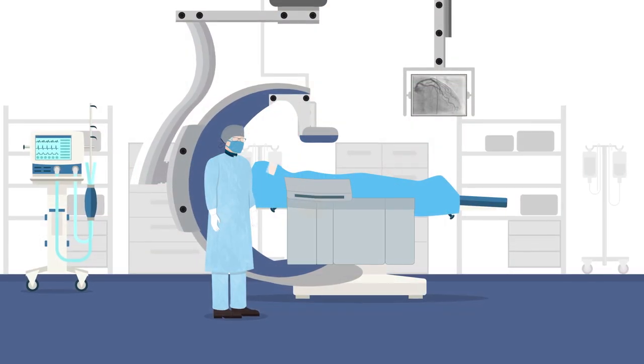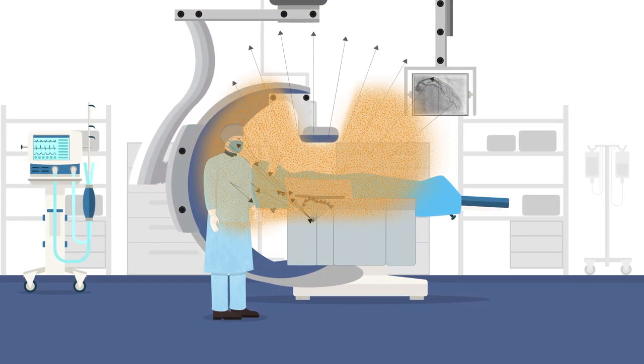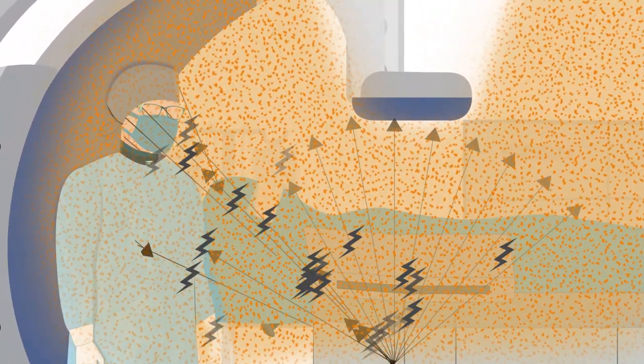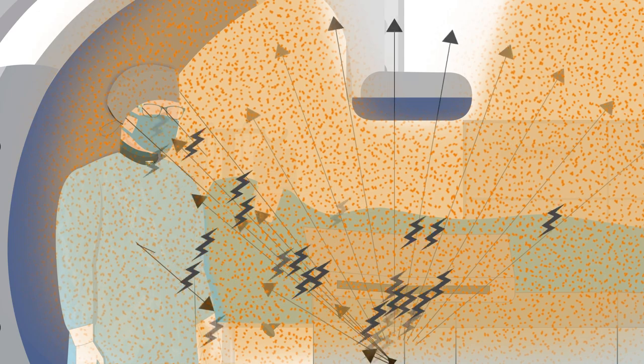Even with robust radiation protection programs including lead aprons, glasses, gloves, and thyroid collars to help mitigate scatter, gaps in coverage leave clinicians vulnerable.